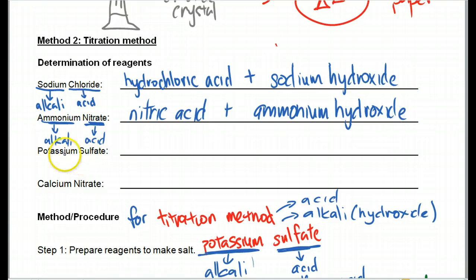Let's look at the next one. Potassium sulfate, which I've gone through. Sulfate will be the acid. Potassium will be the alkali. So it will be sulfuric acid plus potassium hydroxide.